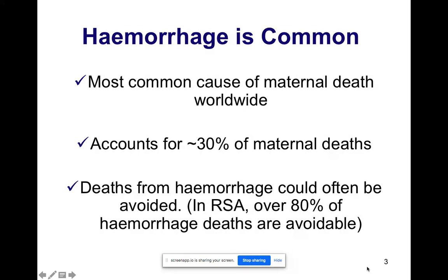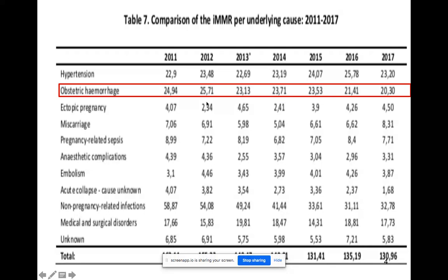As you all know, hemorrhage is the most common cause of maternal death worldwide. It accounts for 30 percent of maternal deaths, and over 80 percent of hemorrhage deaths are due to avoidable factors. Looking at this table of maternal mortality rates from 2011 to 2017, focusing on obstetric hemorrhage: from 2011 it was 24.9, dropping to around 23 in 2013, further down to 20.3 in 2017. So there's definitely been an improvement from almost 25 to 20 percent.